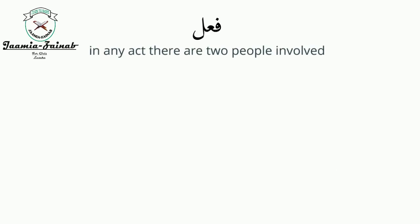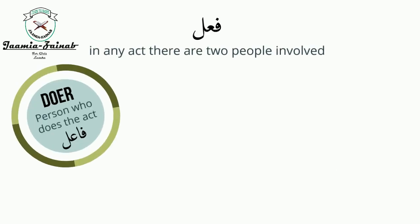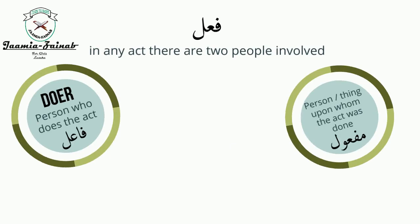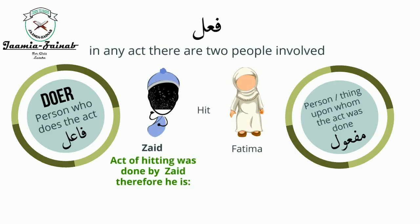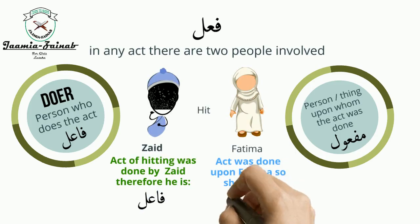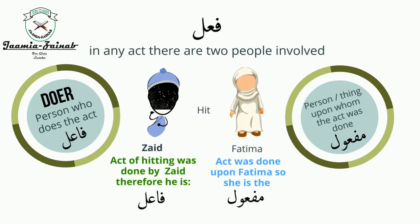The doer is known as the fa'il, and the person upon whom the act was done is known as the maf'ul. Looking at the example — Zayd hit Fatima — Zayd is the fa'il and Fatima is the maf'ul, because the act of hitting was done upon her.